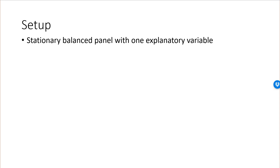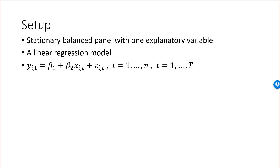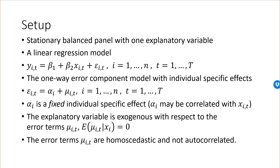The setup for this lecture is as follows. We have a stationary and balanced panel. To simplify notation we only have one explanatory variable. We have a linear regression model: Y_it equals beta_1 plus beta_2 x_it plus an error term epsilon_it. We have an error component model with only individual specific effects. The error term epsilon_it is the sum of the individual specific effect and a random term mu_it. The random term mu_it satisfies all the Gauss-Markov assumptions — the explanatory variables are exogenous with respect to this error term, homoscedastic and not autocorrelated.